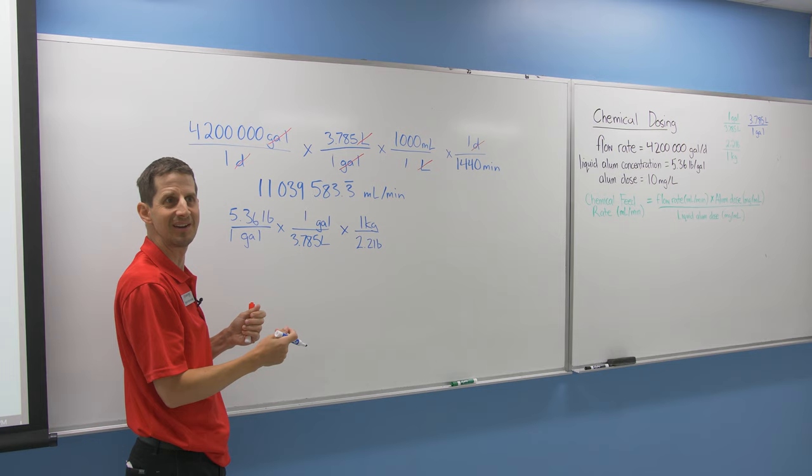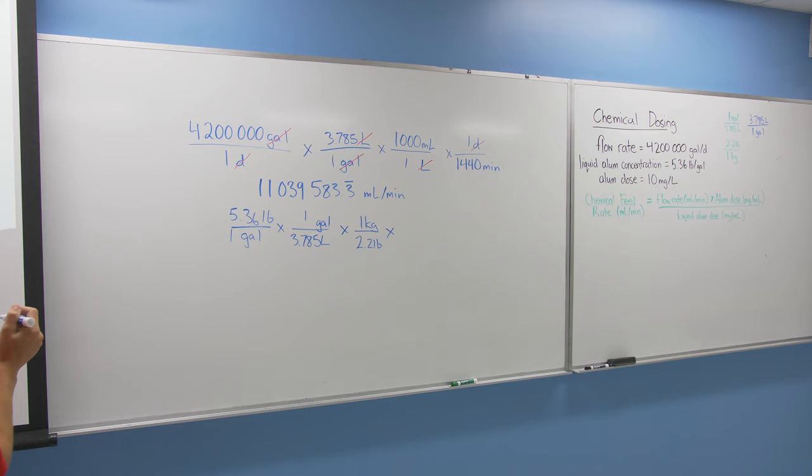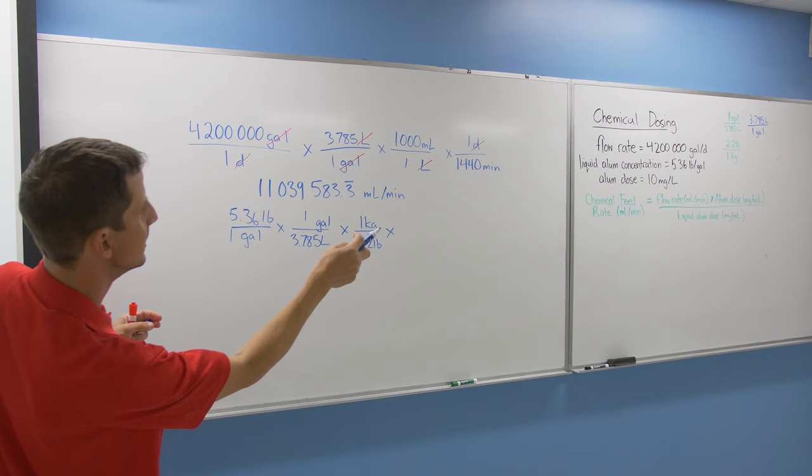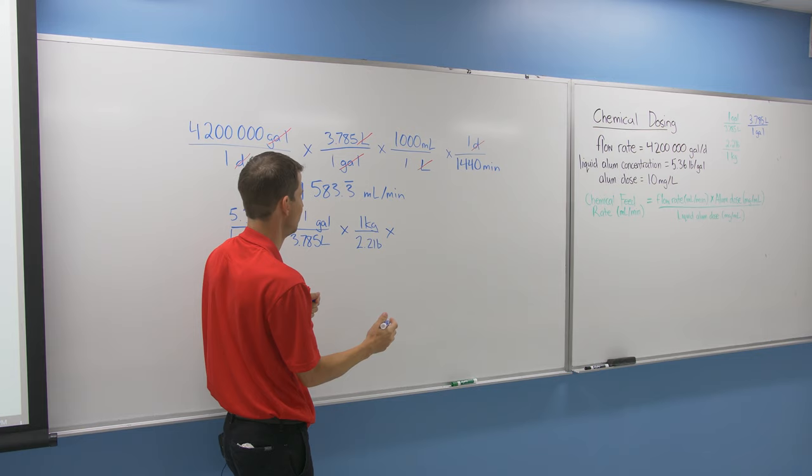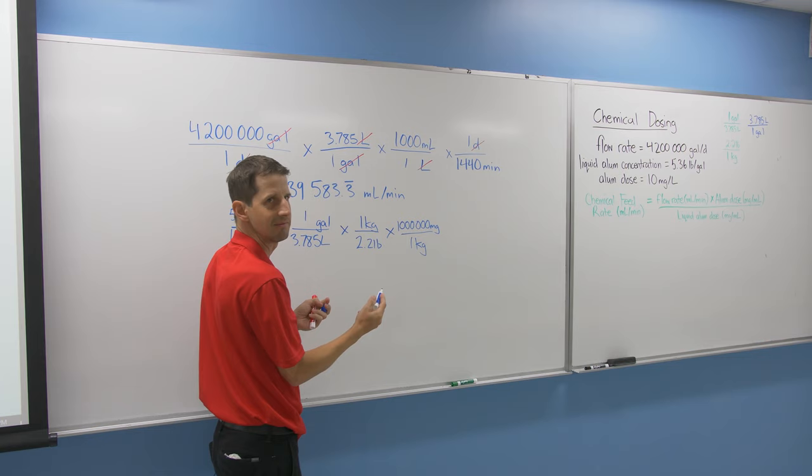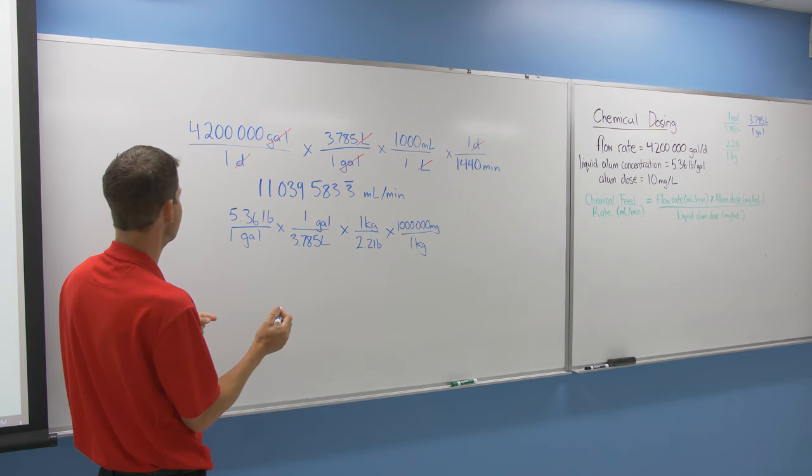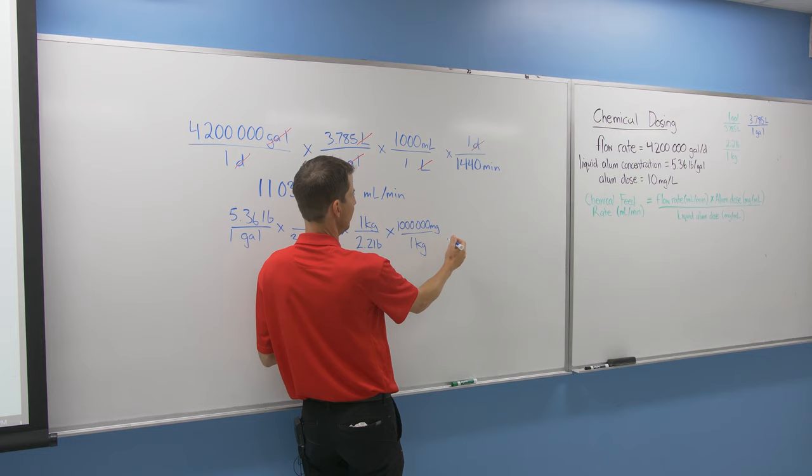Now we need to get it into milligrams per milliliter. So kilograms to milligrams—that's a big one. One kilogram equals one million milligrams. That's a thousand milligrams in a gram and a thousand grams in a kilogram, so six zeros gives you a million.